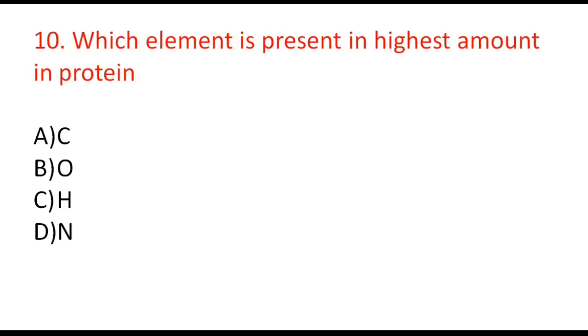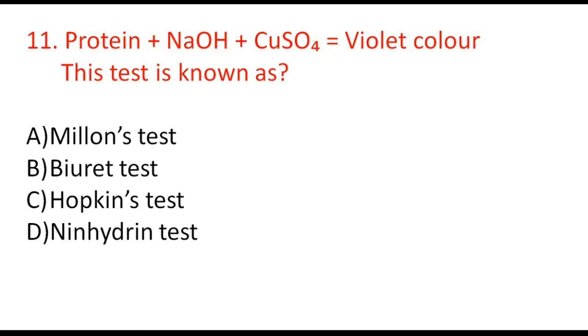Next question: which element is present in the highest amount in protein — carbon, oxygen, hydrogen, or nitrogen? The correct option is A, carbon.